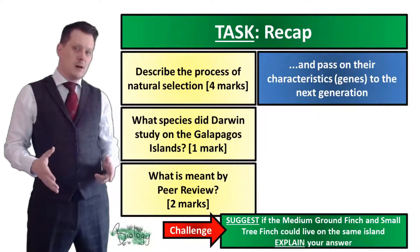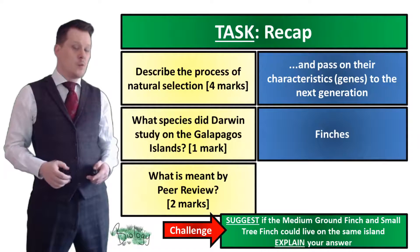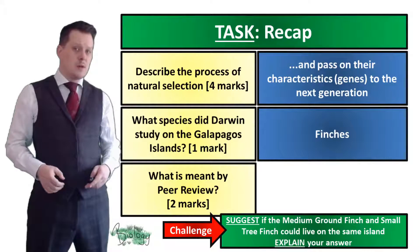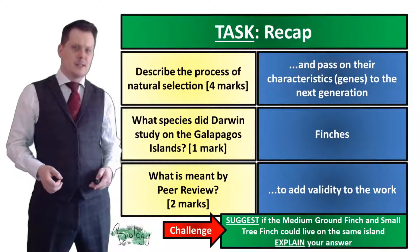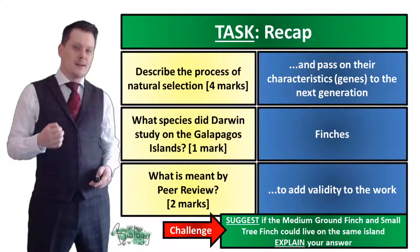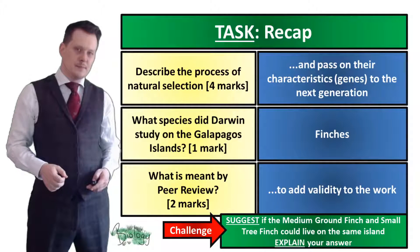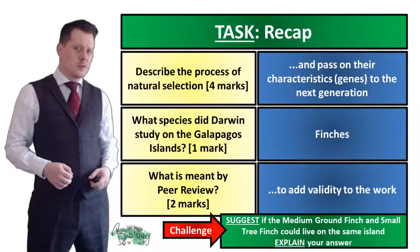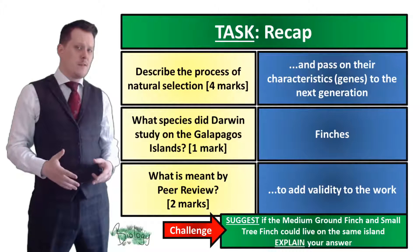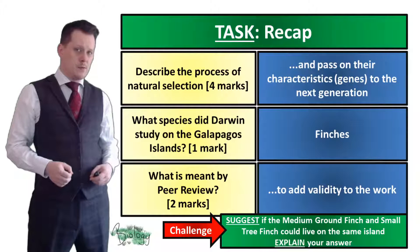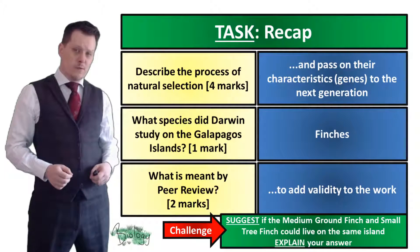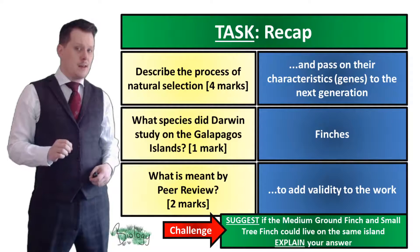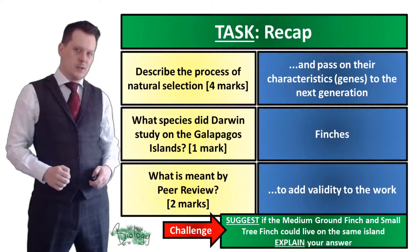The species Darwin studied on the Galapagos Islands were the finches. Peer review is when a scientist checks the work of another scientist to add validity to the work. Nowadays, when scientific journals get published they often go through three peer reviews, and if one reviewer disagrees with what you've written, your work doesn't get published.